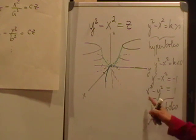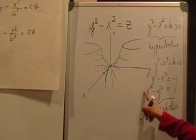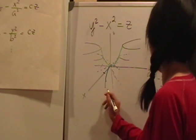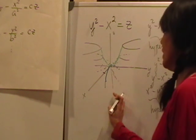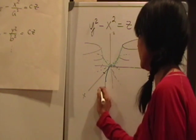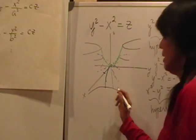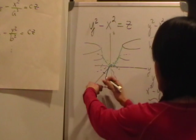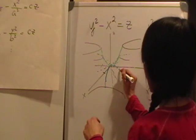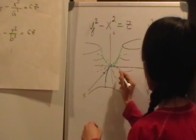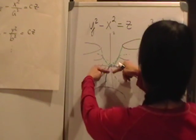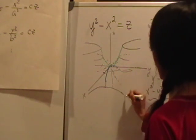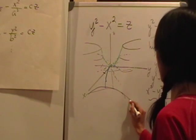When x squared is the positive term, the vertices are on the x-axis and the hyperbolas open toward us and to the back — front and back rather than sideways. So you have a hyperbola opening toward us and another opening to the back.